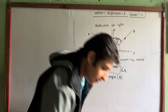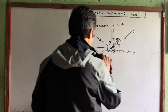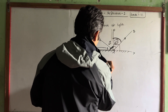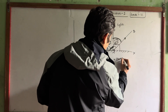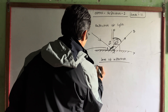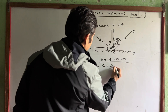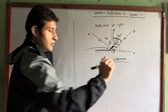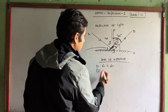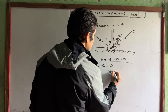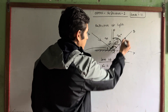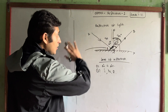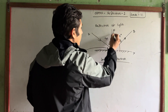The laws of reflection: angle i is equal to angle r — the angle of incidence is equal to the angle of reflection, for example 30 degrees. This is the first law. The second law states that the incident ray, normal, and reflected ray all lie on the same plane — the plane of the board.